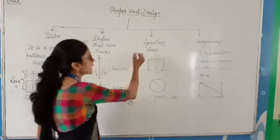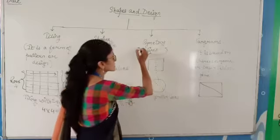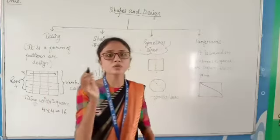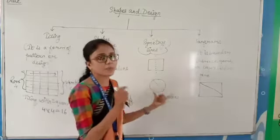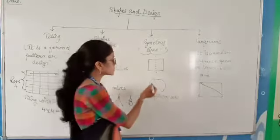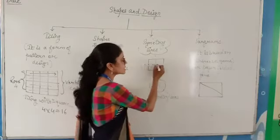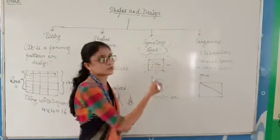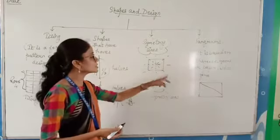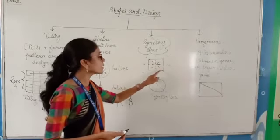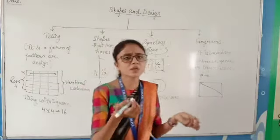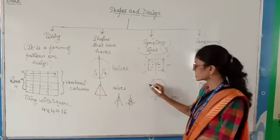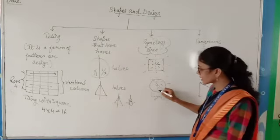Now the third topic we did is symmetry lines. Symmetry lines are also known as halves. Symmetry lines are dotted lines that divide any shape into two equal parts, whether horizontal or vertical. A dotted line drawn through a shape is known as a symmetry line. If you draw a line through a shape, these are symmetry lines.